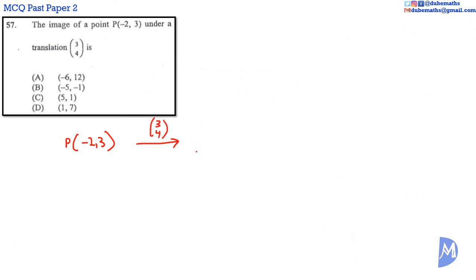Question 57. The image of a point P(-2, 3) under a translation (3, 4) is equal to (-2 + 3, 3 + 4). This is equal to 1, 7. The answer is D.